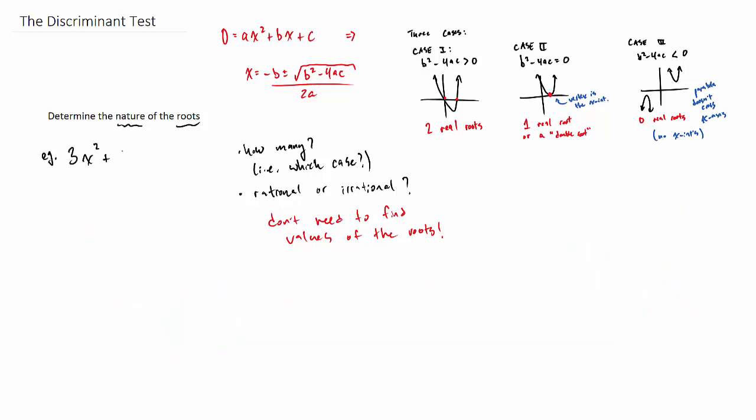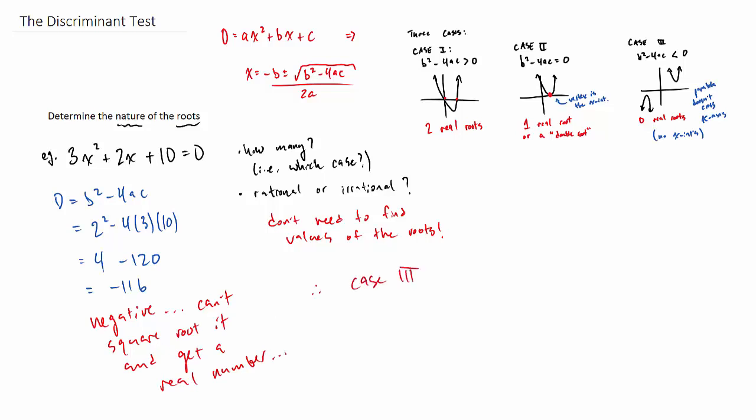All right, let's do one more quick one here. This time we'll say 3x squared plus 2x plus 10. And we should notice right away that the c value and the a value are both positive. So we'll see what happens when we plug them in. This time we are going 4 minus 120. Notice we're not minusing a negative, so our discriminant turns out to be a negative number. Which means we can't get a real number when we square root that value. So we are in case 3 now, which means we have no real roots.